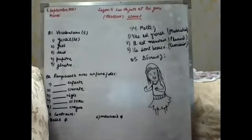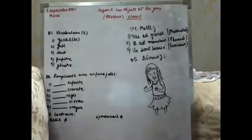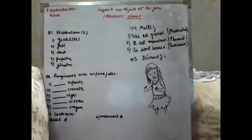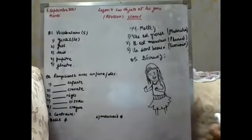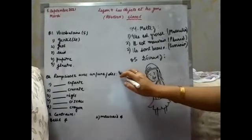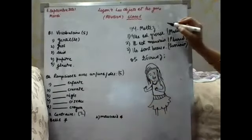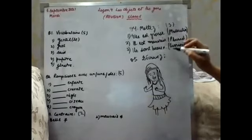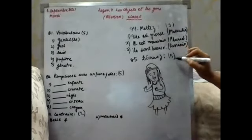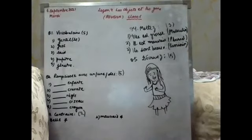This is the revision for Chapter 4, 'Les Objets et Les Gens'. There are five questions. Question 1 is for five marks, question 2 is five marks, question 3 is two marks, question 4 is three marks, and question 5 is five marks. The test is for 20 marks total.